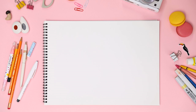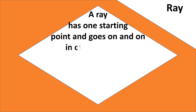I am going to draw a ray. Here is a point P which is the starting point or initial point for this ray, and here is the ray. Therefore we can say that a ray has one starting point and goes on and on in the other direction.